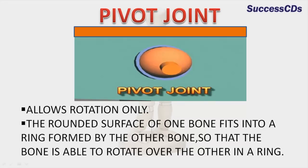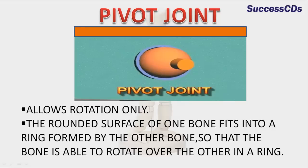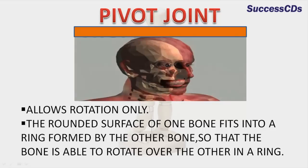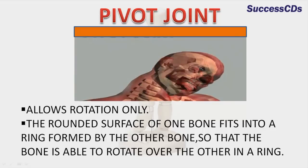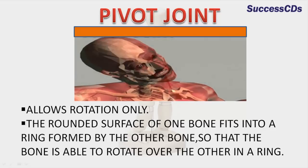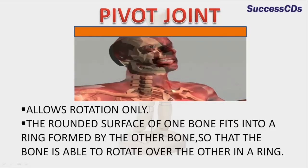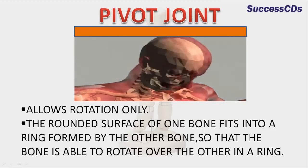Pivot joint allows rotation only. In this joint, the rounded surface of one bone fits into a ring formed by the other bone, so that one bone is able to rotate over the other in a ring.